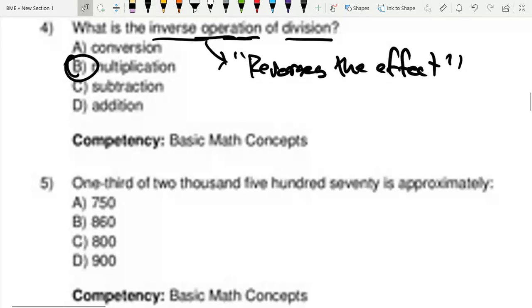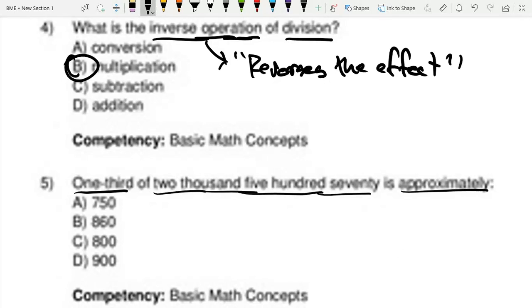The next question is, one third of 2,570 is approximately. So this is 2,570 and this is one third. Now, one third is equal to one over three, which is equal to 0.3 repeating.